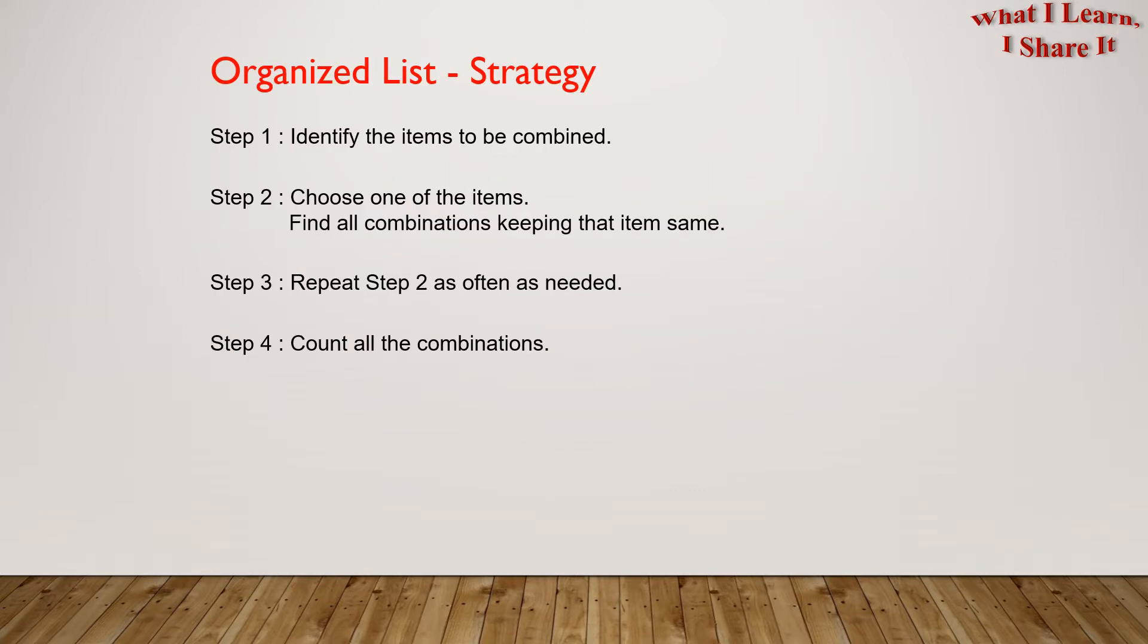Organized List Strategy. Step 1: Identify the items to be combined. Step 2: Choose one of the items. Find all the combinations keeping that item the same. Step 3: Repeat Step 2 as often as needed. Step 4: Count all the combinations.